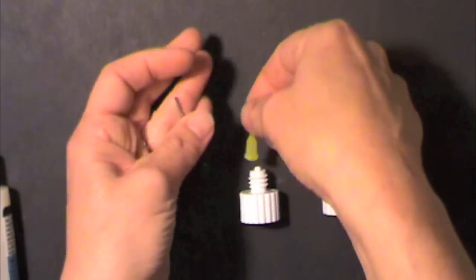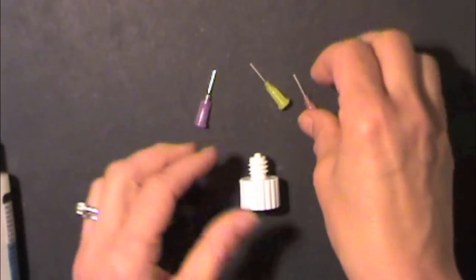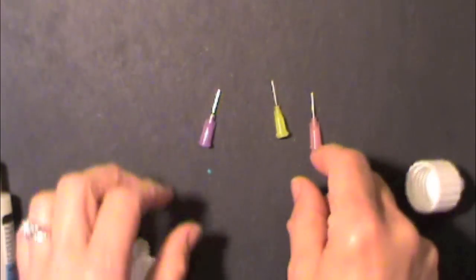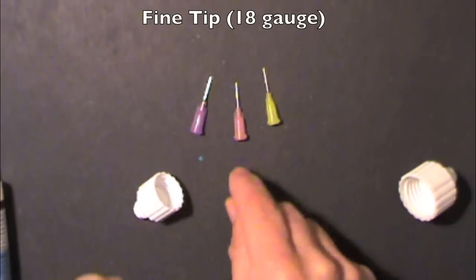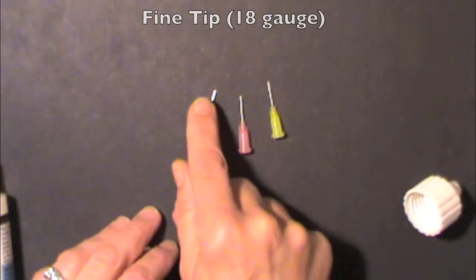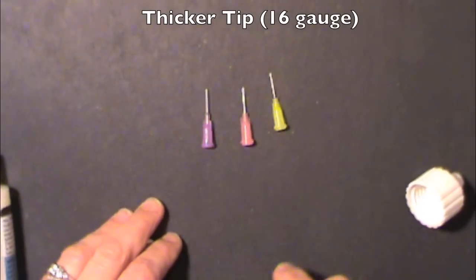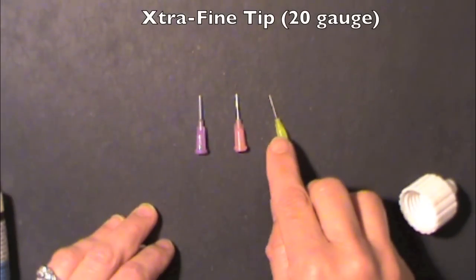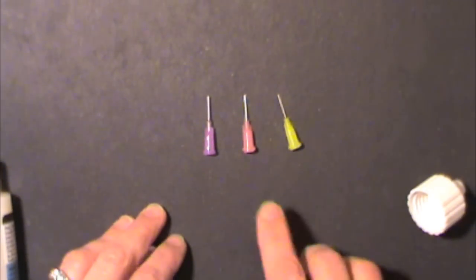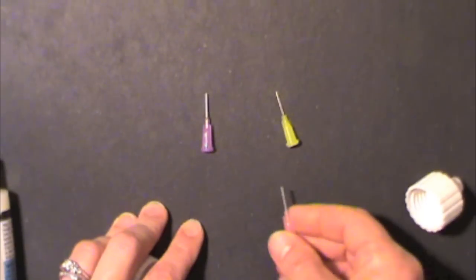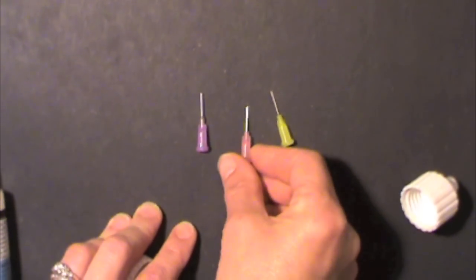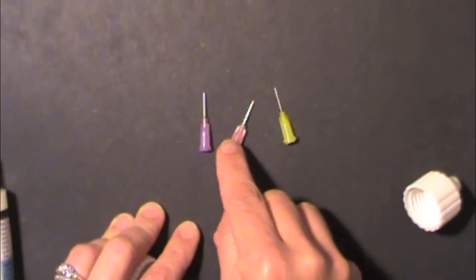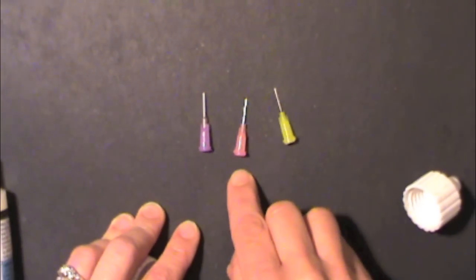There are also three different tips. The fine is the pink. The thicker is the purple. And the extra fine is the yellow. If you ask me which one do I prefer, I think I'd have to say the fine, the medium tip.